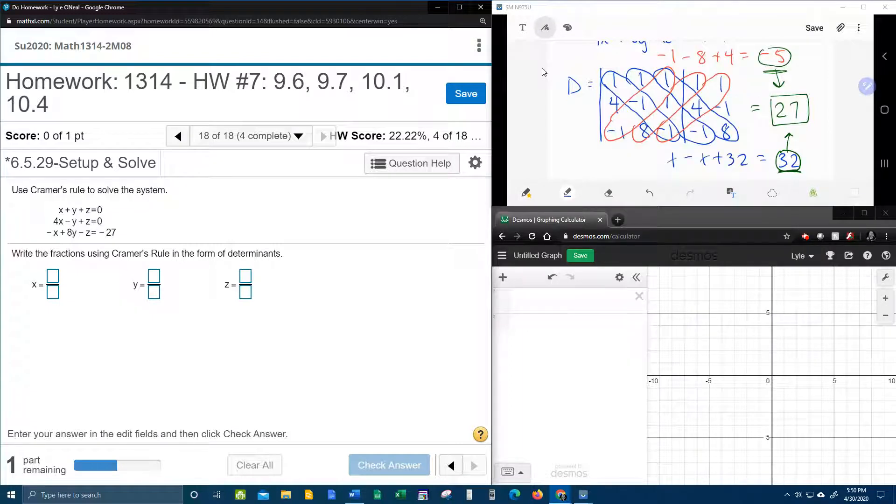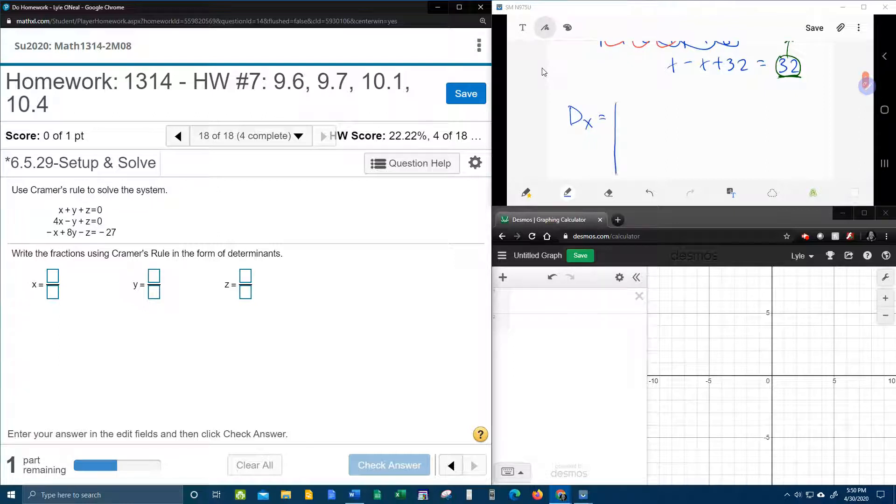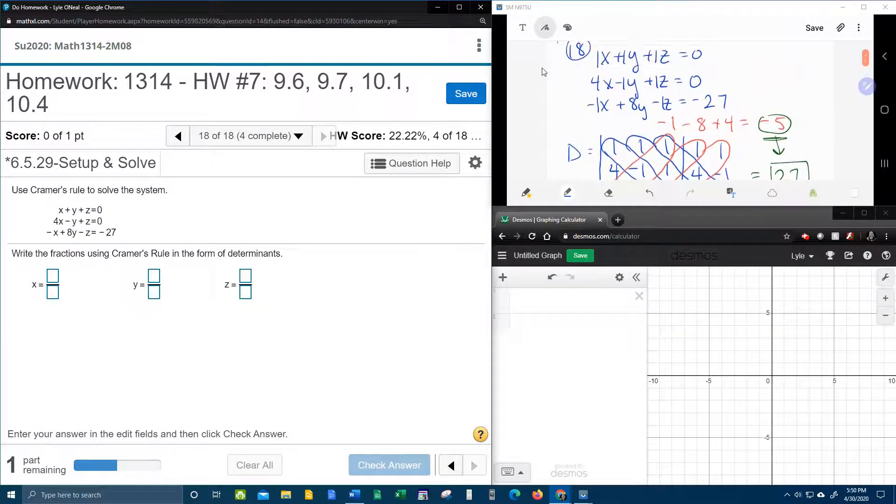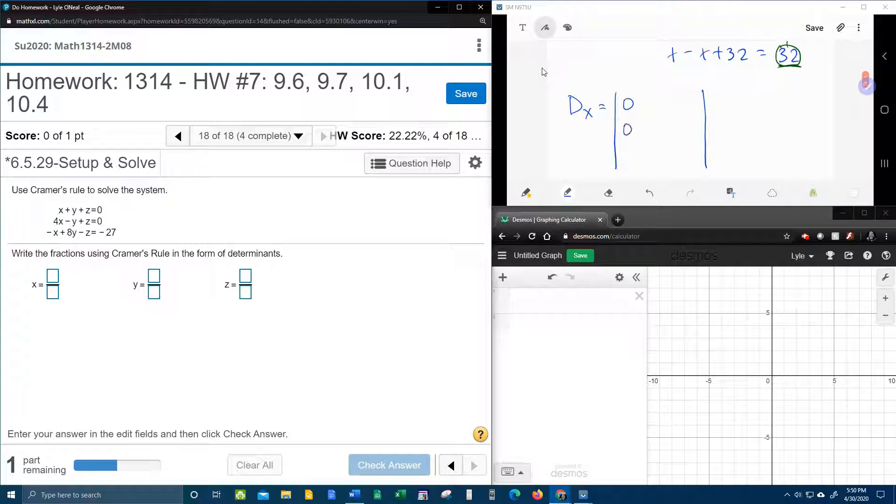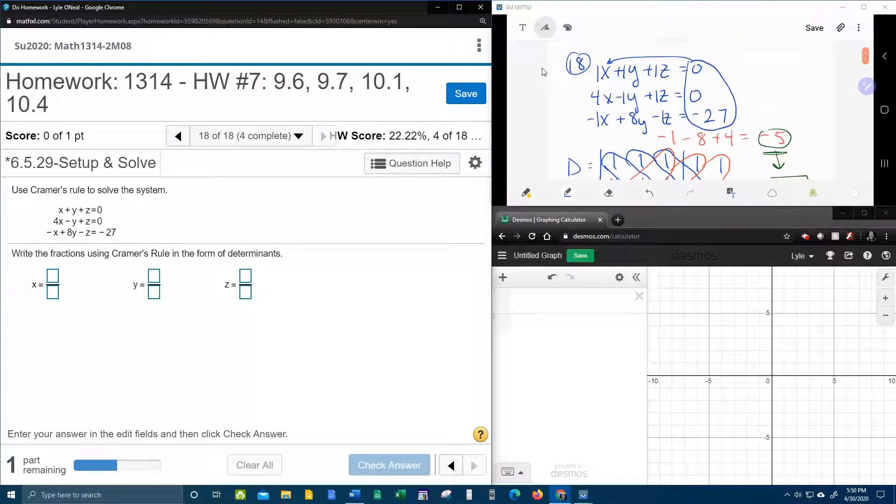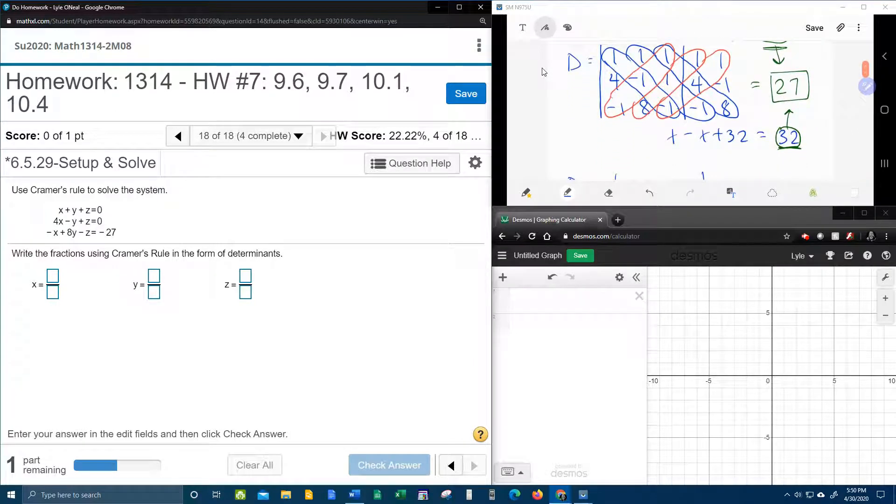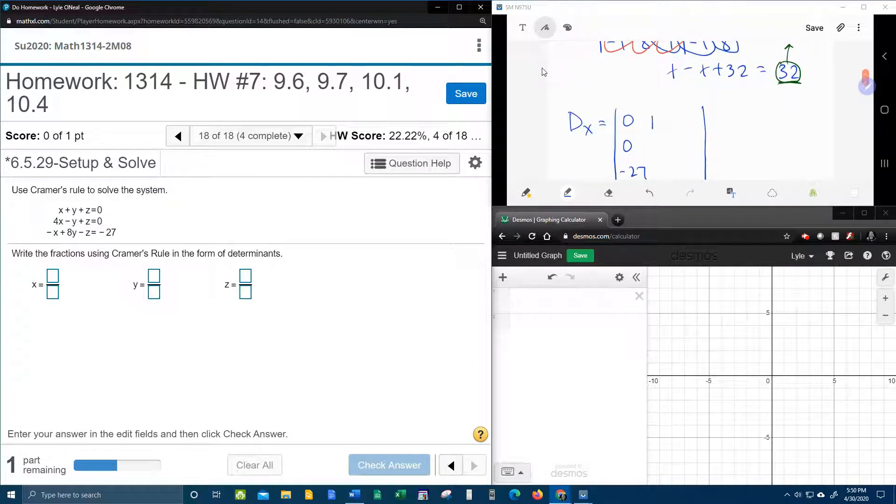Here we go. D sub x. I told you it's going to be a little bit of a ride here. D sub x says to take the constants in place of the x's. So we're going to have 0, 0, negative 27. Did you see that? Now the constants take the place of the x's. And the y's and the z's stay the same. So 1, negative 1, and 8. And 1, 1, and negative 1.